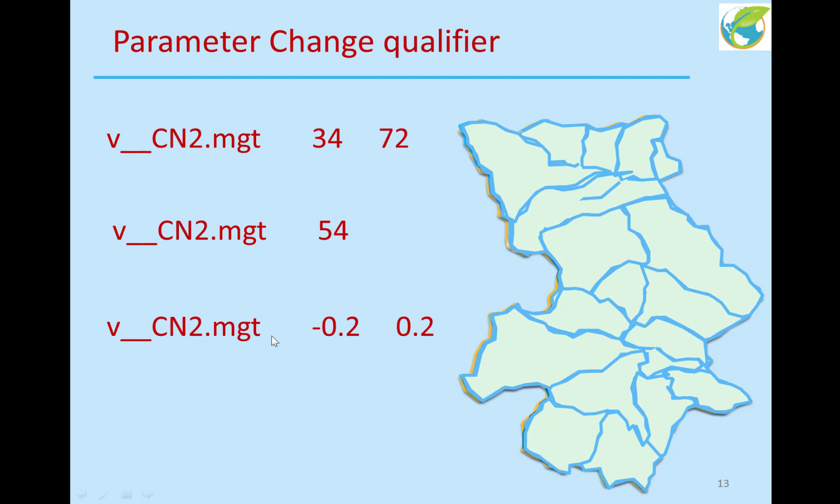And, some people even use this, where they have a V, a value change from minus 0.2 to 0.2. That doesn't, what SWOT does, it puts everything to 20, for example, if it's a negative number. So, this is not allowed. Please, don't do this.